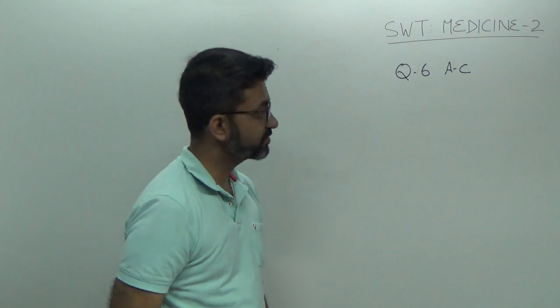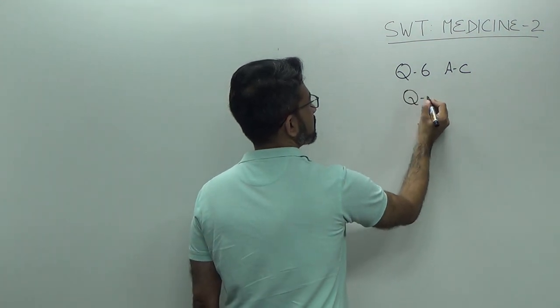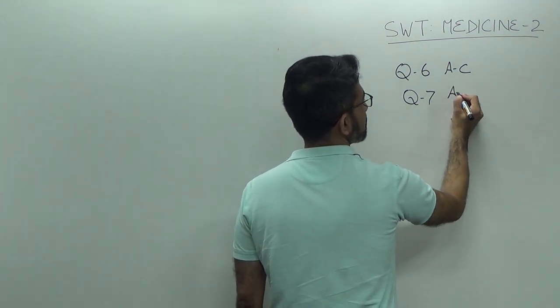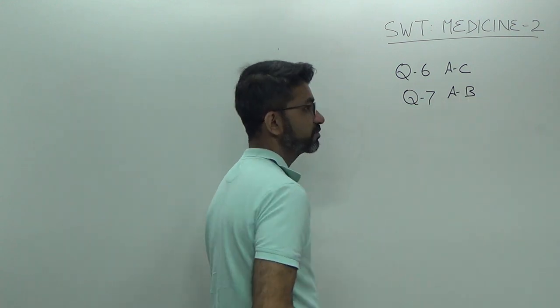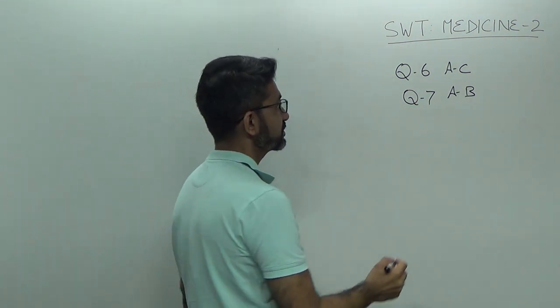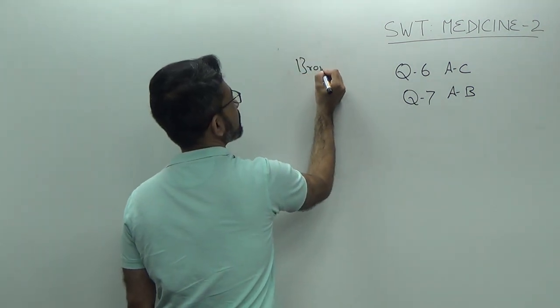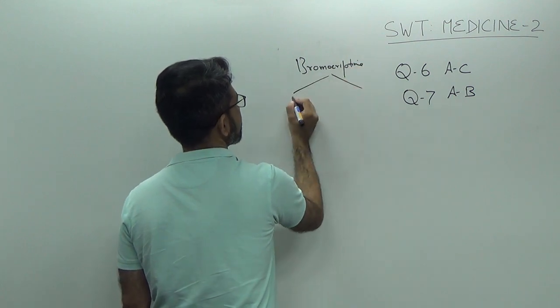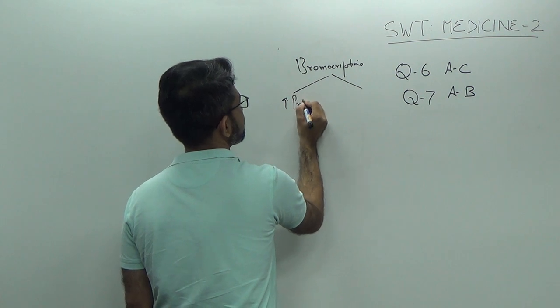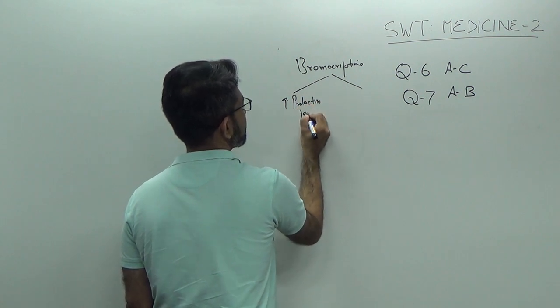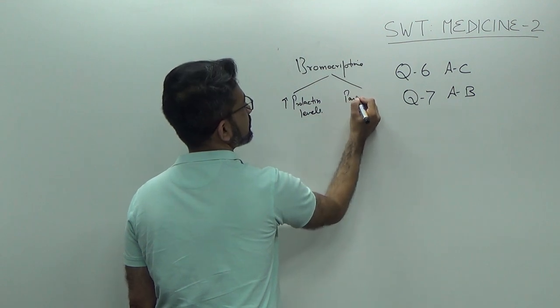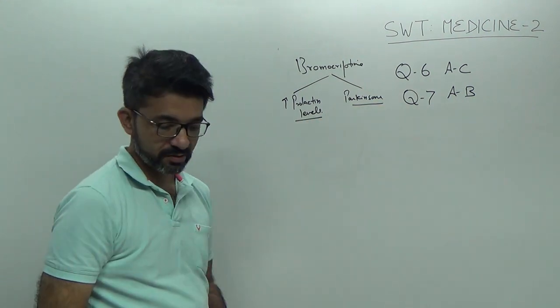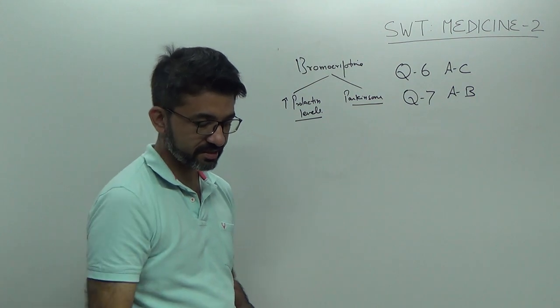Which of the following is an anti-diabetic drug? Question number 7, answer is Bromocriptine. It is a dopaminergic agent. Also used in patients with increased prolactin levels and Parkinson's. And it is a new anti-diabetic drug.